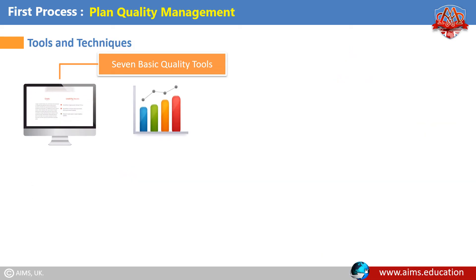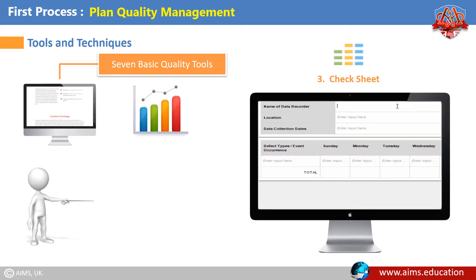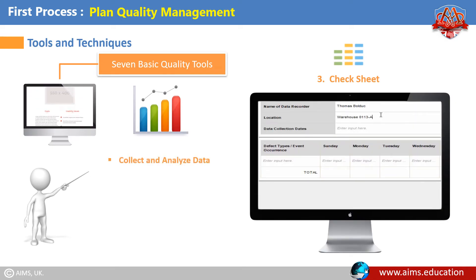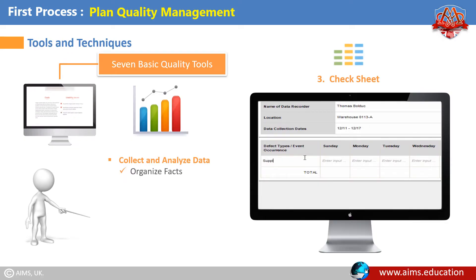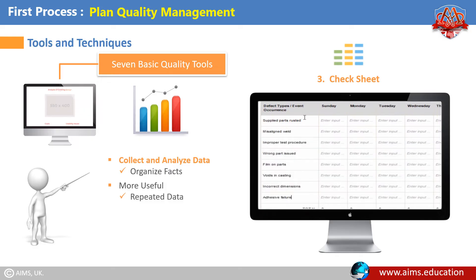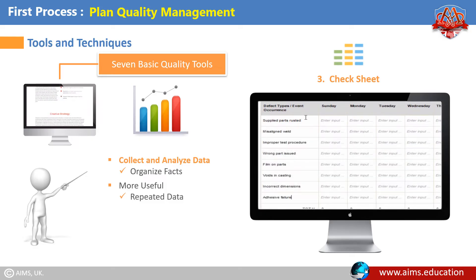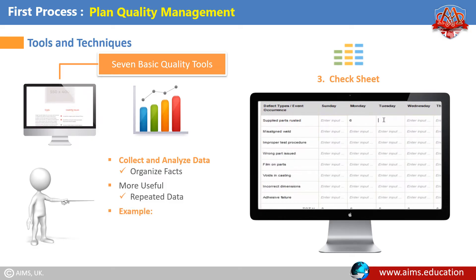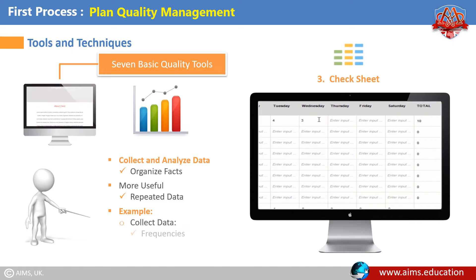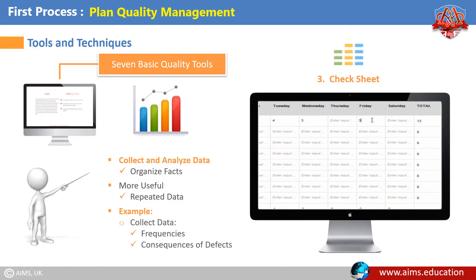The third basic quality tool — Check Sheet: A check sheet is a structured form prepared to collect and analyze data, which leads to organizing facts about a potential quality problem. It is most useful when repeated data is collected from the same person or effect. For example, a check sheet is used to collect data about the frequencies or consequences of defects.